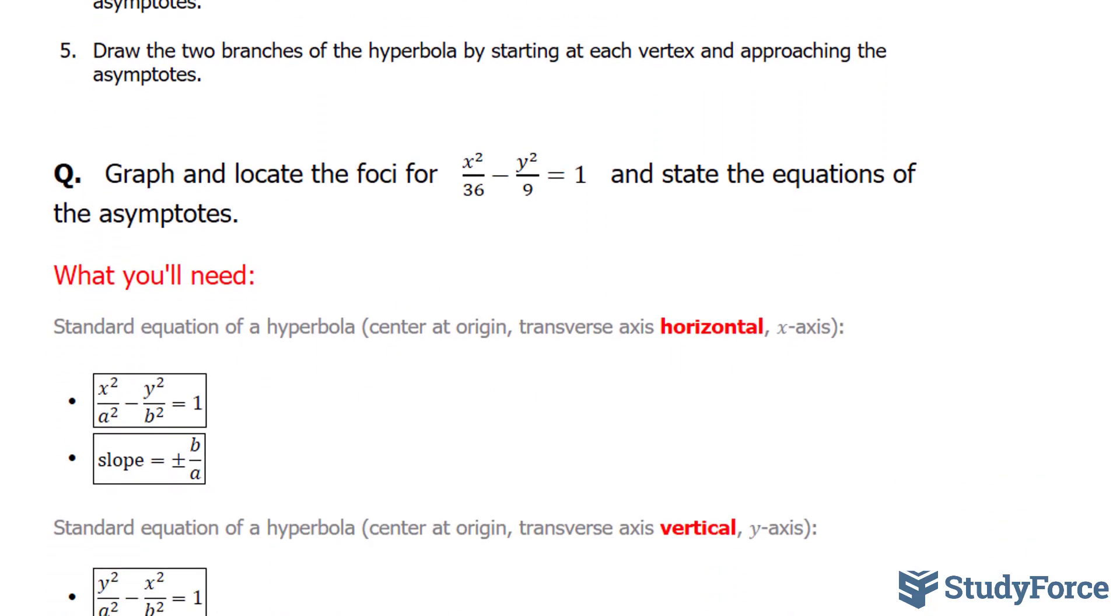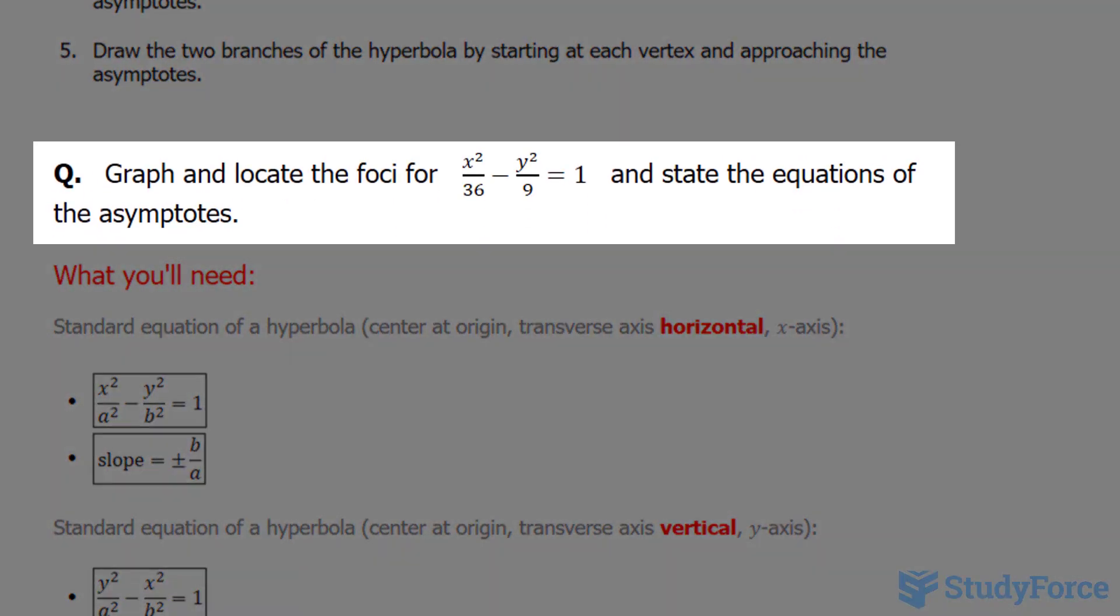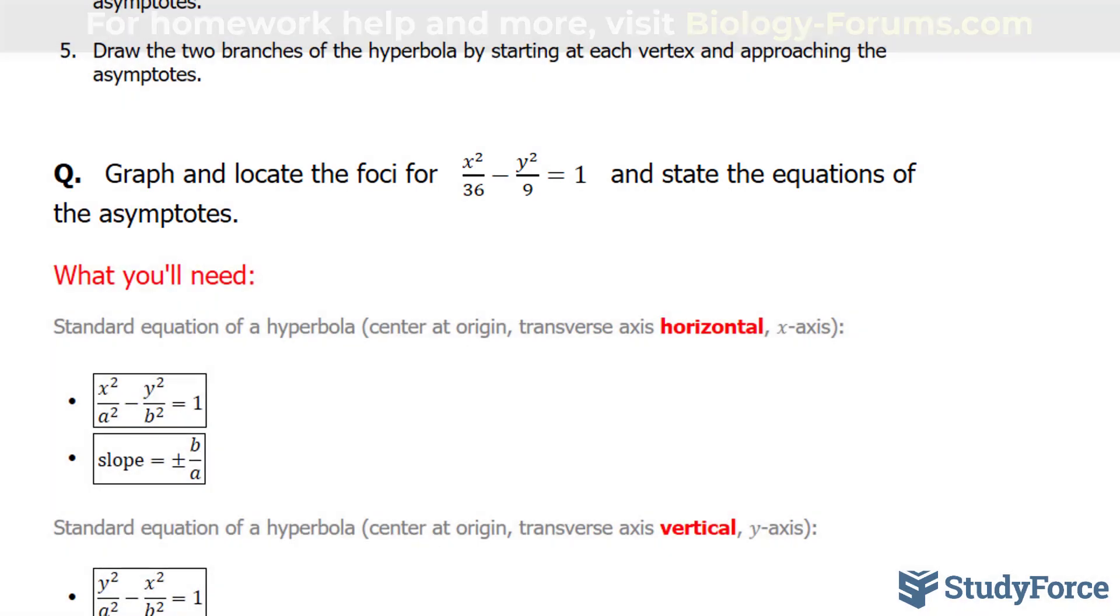The question that we're answering here is to graph and locate the foci for the equation x² over 36 minus y² over 9 equals 1 and state the equations of the asymptotes.